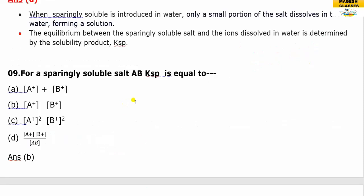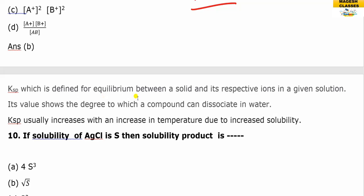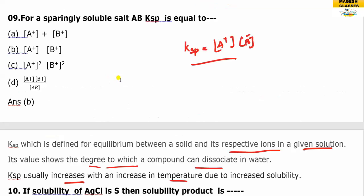For a sparingly soluble salt AB, the Ksp (solubility product) is the equilibrium constant. It is defined as the equilibrium between the solid and its respective ions in a given solution. Its value indicates the degree to which the compound dissolves in water, and it increases with temperature.